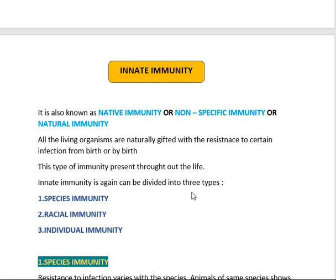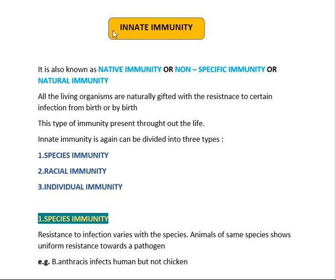Innate immunity is also called natural immunity, native immunity, or non-specific immunity. Just as 'native place' refers to where you were born, innate immunity is the immunity we get by birth. All living organisms are naturally gifted with resistance to certain infections from birth, and genetically we get some sort of immunity called innate or non-specific immunity.